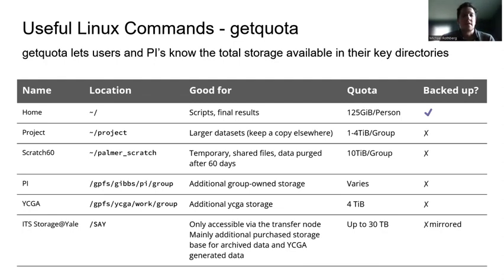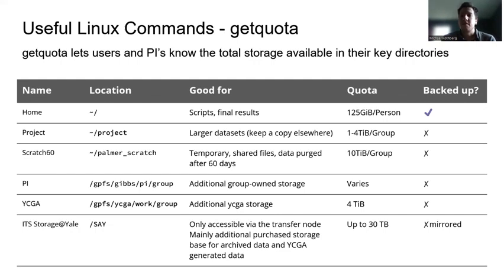Your home directory is your default location and a great place for scripts and final results. Each user gets 125 gigabytes per person and this is a backed-up location. Project is your large collaborative workspace — groups will have one to four terabytes to share between their members. This is a great place to keep ongoing analyses, but it is not a backed-up location, so you should keep a secondary location of anything important. We do provide snapshots: if you delete something within 72 hours, we have the ability to recover it, but after 72 hours that data will be gone. Scratch60, or Palmer Scratch, is a temporary shared location — data is purged after 60 days — but provides the most space, about 10 terabytes per group.